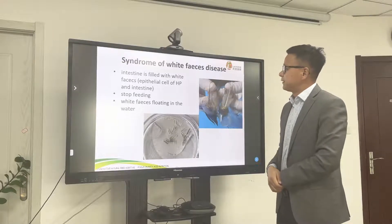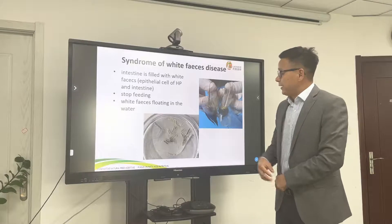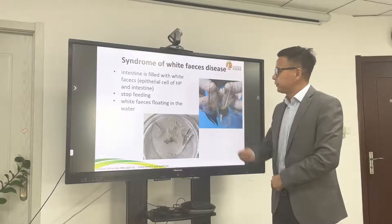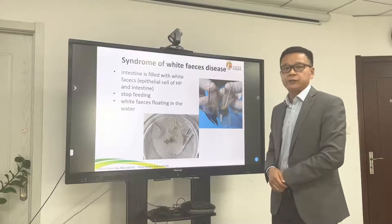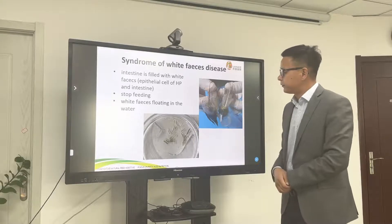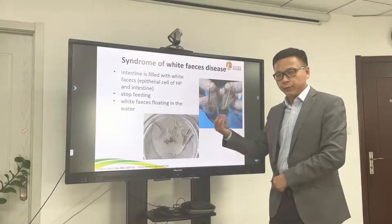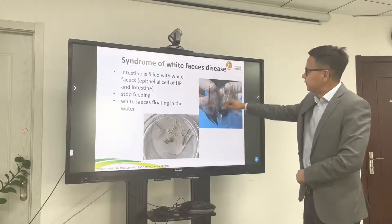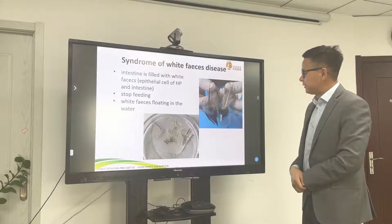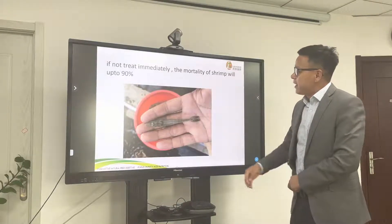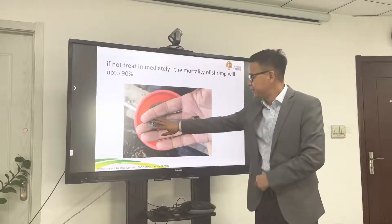The following will be the white feces disease. At the beginning, the feces look like this. Actually the intestine is not filled with real feces — it's the epithelial cells of the hepatopancreas and the intestine. Then the shrimp also stop feeding. White feces will be floating in the water body on the oil pan. This is the normal healthy intestine of shrimp, and this one is filled with all the white feces. If not treated immediately, the mortality of shrimp will be up to 90%.